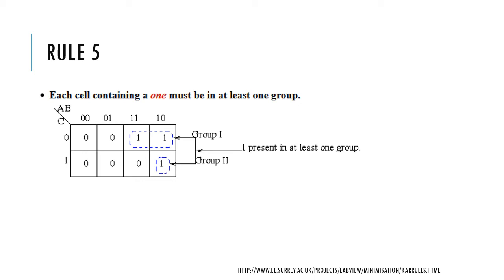Rule number five: each cell containing a one must be in at least one group. As shown, this group of 2 and this group of 1 ensure every one is included — no one can be left without a group.